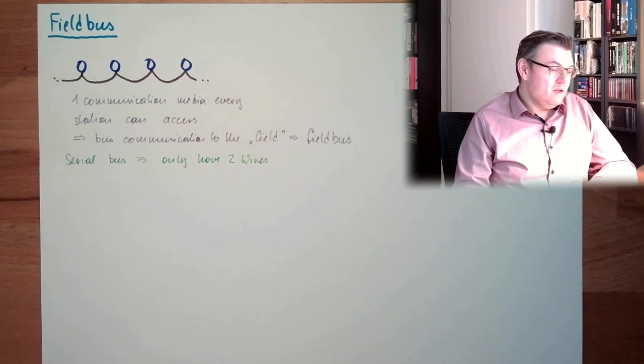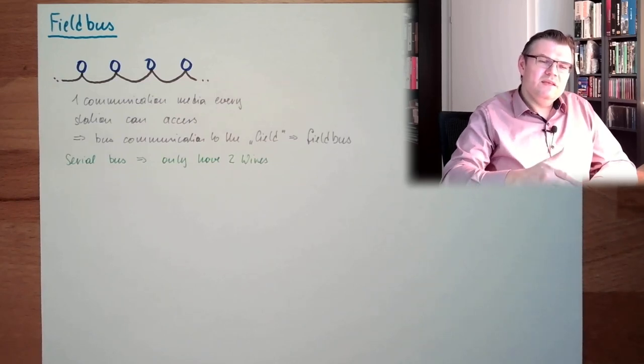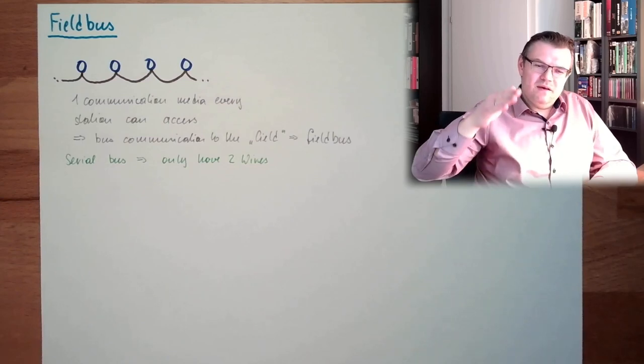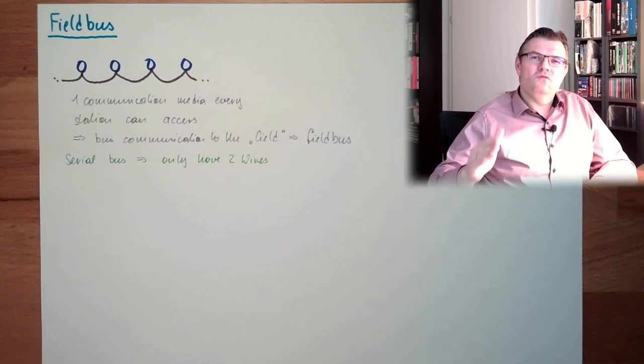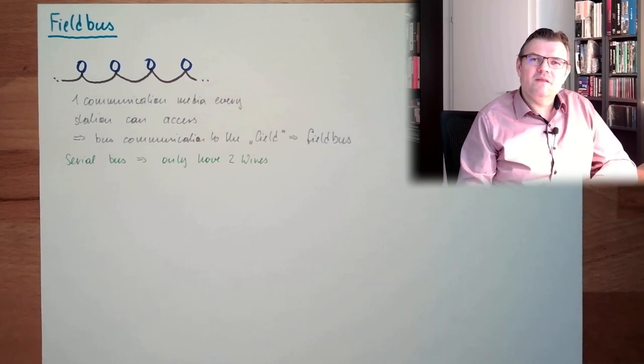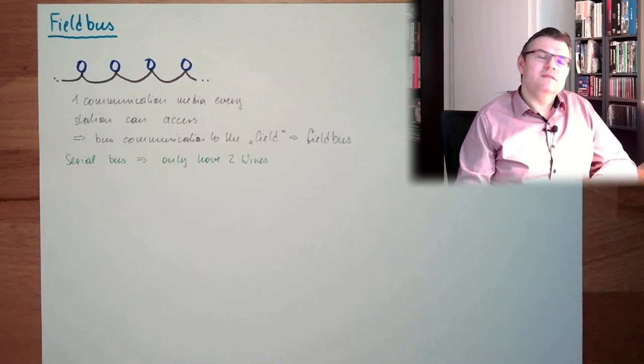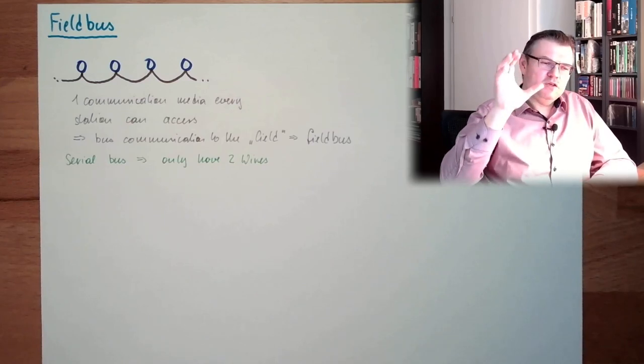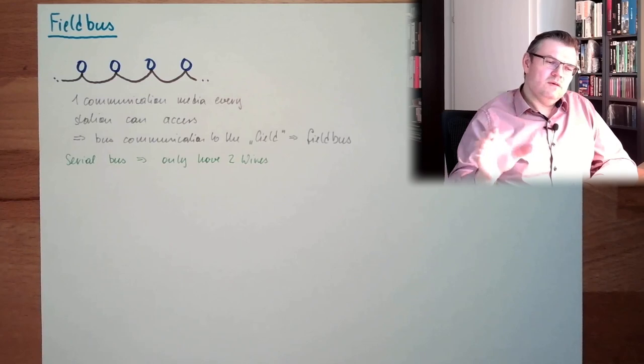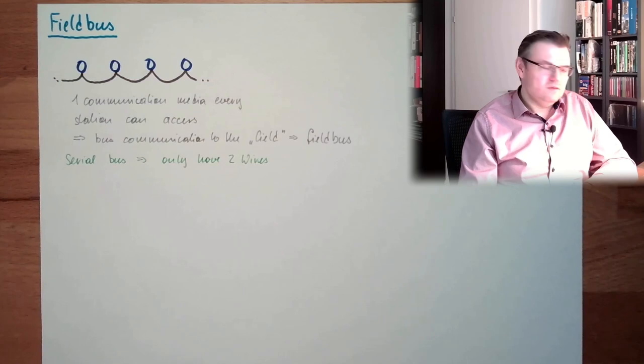And then somebody said, hey, one moment. If I have to use these companies' items, I am totally dependent on these companies - cannot be. And so the communication structure was separated into parts, into so-called layers.